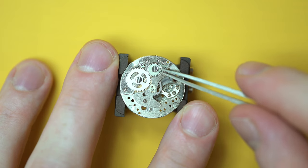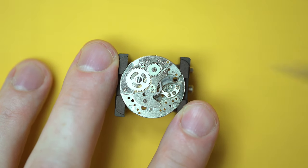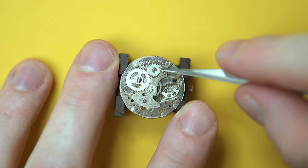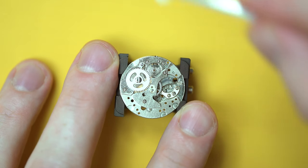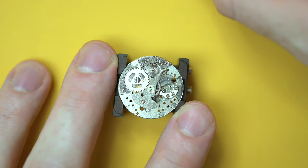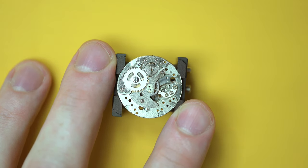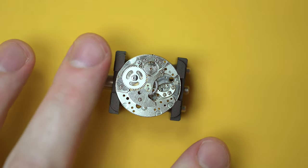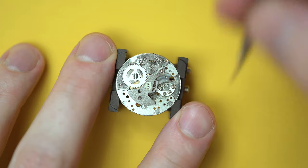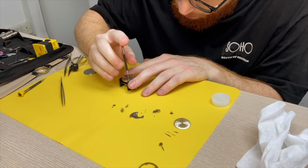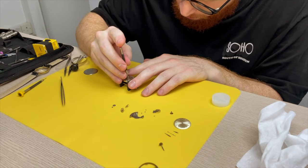So the jewel in a watch actually serves a purpose, and it's more for like a low friction surface for all the rotating parts to rest against. So this one being a cheaper movement, there were no jewels on that bridge. It was just direct drilled holes. But now that that bridge is off, we can see more inside this watch and see what makes this thing work.